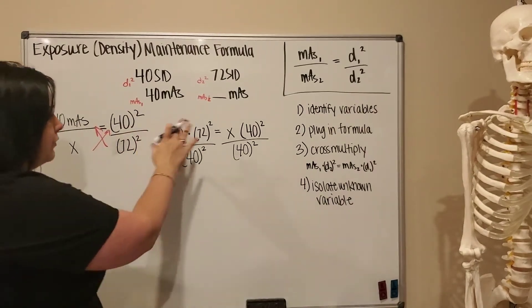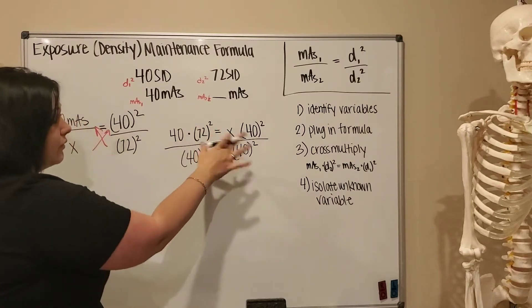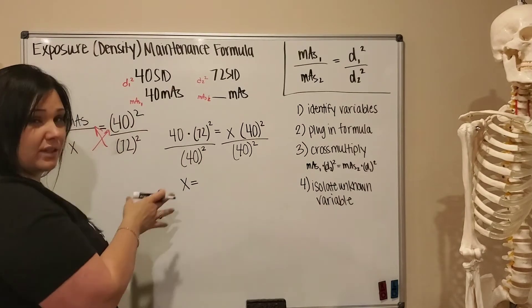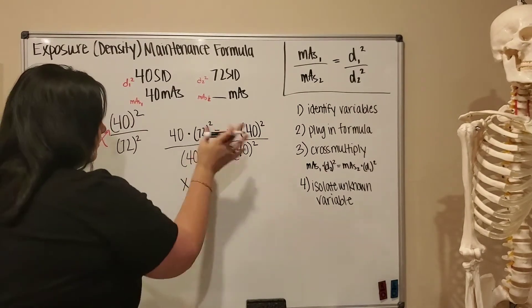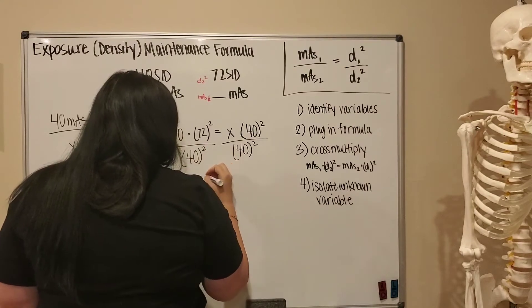So that translates—you can get rid of this now and simplify that down to x. I'd like to put it on the left, I think it looks cleaner. You can do it either way. X being equal to your 40 times 72 squared over 40 squared.